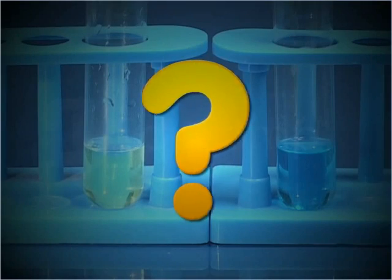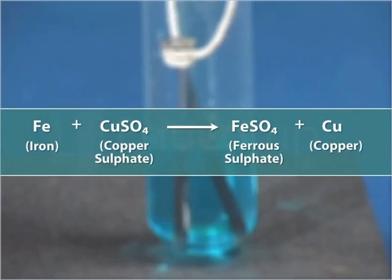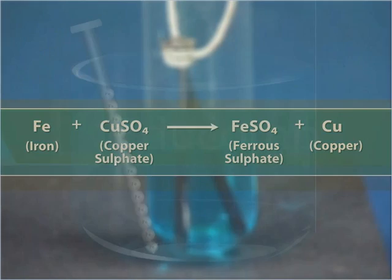What is the reason behind these changes? When iron nails are dipped in copper sulfate solution, the iron metal reacts with copper sulfate which results in the formation of ferrous sulfate and copper metal.